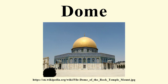Corbel domes achieve their shape by extending each horizontal layer of stones inward slightly farther than the lower one until they meet at the top. A false dome may also refer to a wooden dome. True domes are said to be those whose structure is in a state of compression, with constituent elements of wedge-shaped voussoirs, the joints of which align with a central point. The validity of this is unclear, as domes built underground with corbeled stone layers are also in compression from the surrounding earth.